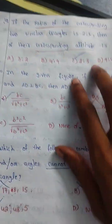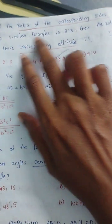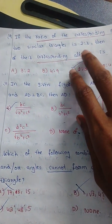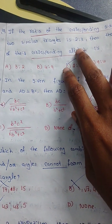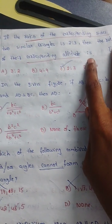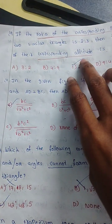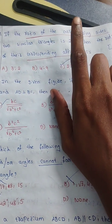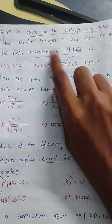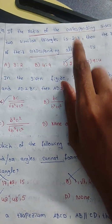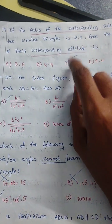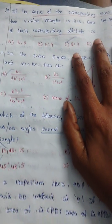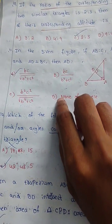Now we have the 10th question: if the ratio of the corresponding sides of two similar triangles is 2:3, then the ratio of their corresponding altitudes is the same. So the ratio of altitudes is also 2:3, and option C, 2:3, is the correct answer.